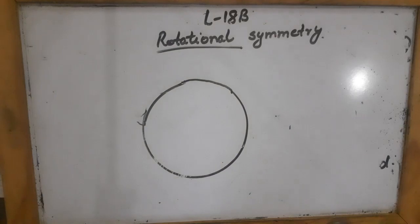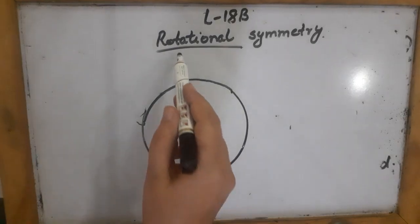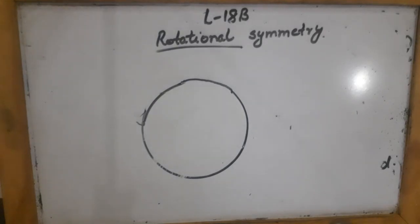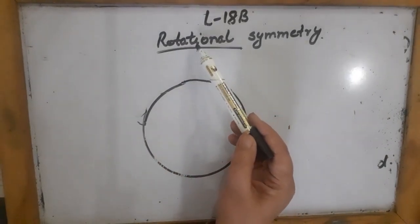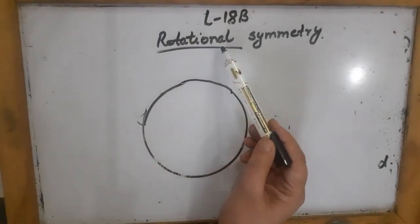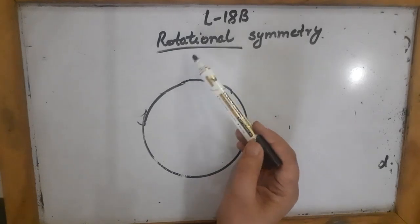Students, now we start with exercise 18B, in which you will learn about rotational symmetry. In exercise 18A we studied about reflection symmetry, or line symmetry, also called mirror symmetry. Now we will study about rotational symmetry. As you can learn from the word itself, rotation deals with something rotational.